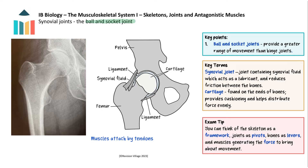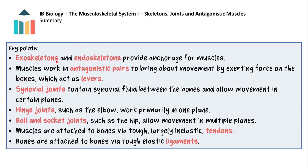The muscles are the active components which, when stimulated by the nervous system, generate the force to move the bone to bring about movement. In this video we have seen how exoskeletons and endoskeletons provide anchorage for muscles. Muscles work in antagonistic pairs to bring about movement by exerting force on the bones which act as levers. Synovial joints contain synovial fluid between the bones and allow movement in certain planes. Hinge joints, such as the elbow, work primarily in one plane. Ball and socket joints, such as the hip, allow movement in multiple planes. Muscles are attached to bones by tough, largely inelastic tendons, and bones are attached to bones by tough, elastic ligaments.